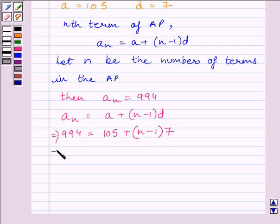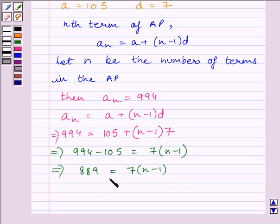This implies 994 minus 105 is equal to 7 multiplied by (n-1). We get 889 is equal to 7 multiplied by (n-1). This implies 889 upon 7 is equal to (n-1).